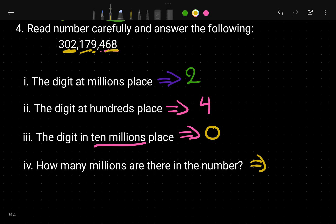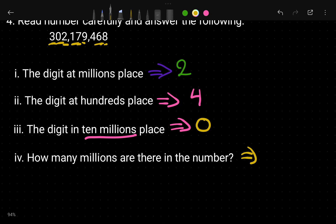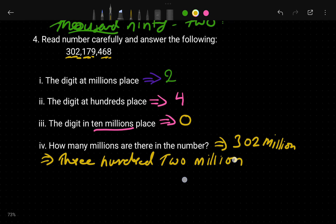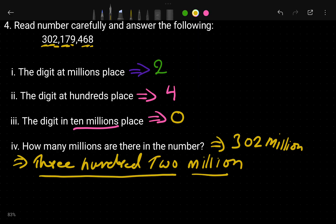The fourth sub-question asks: how many millions are there in this number? Counting the place values — ones, tens, hundreds, thousands, ten thousands, hundred thousands, million, ten million, hundred million — there are 302 millions in this number. So we write three hundred two millions, or equivalently 302 million.